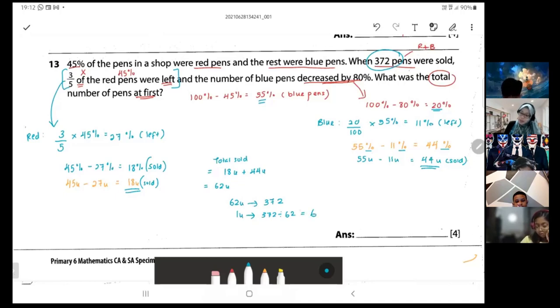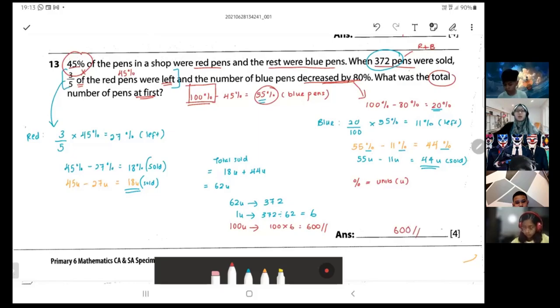And then I want to know how many at first. At first, 45 and 55, you know that eventually everything starts off with 100 units because I represent my percentage as units. So this is 100 times 6 equals to 600.